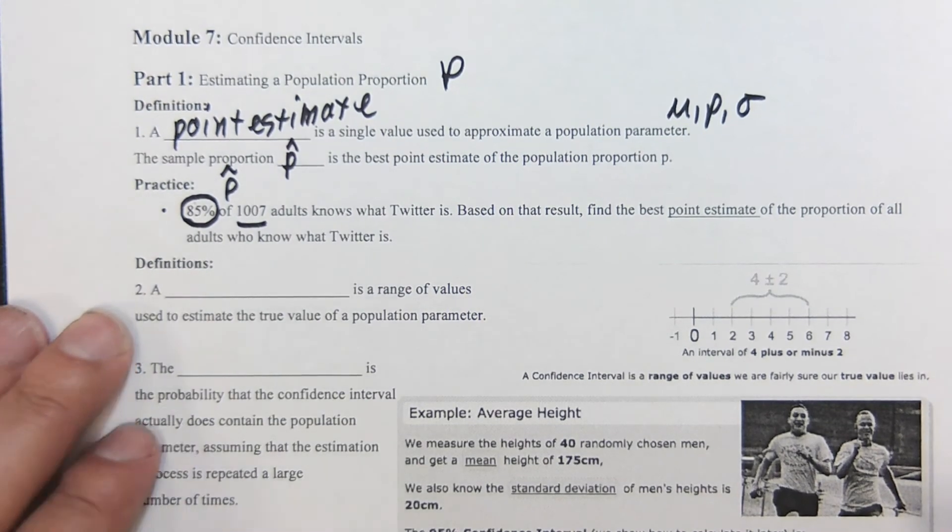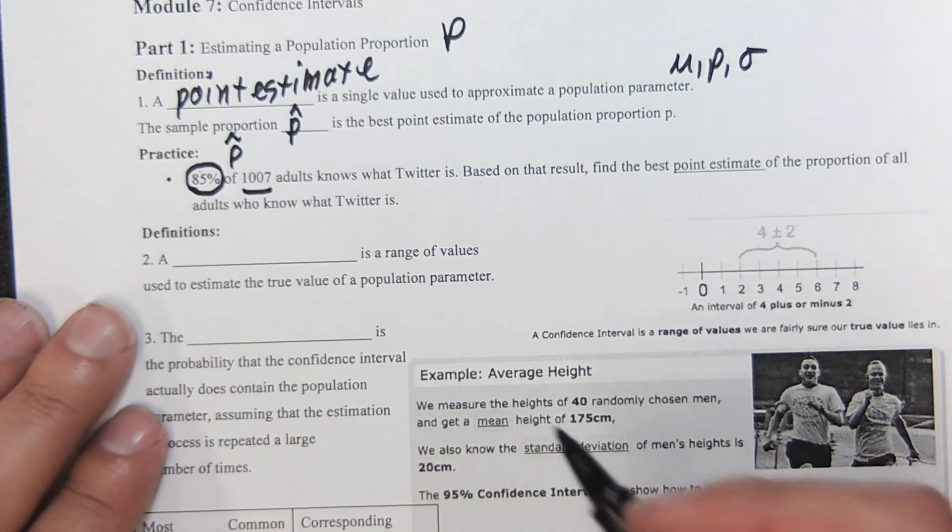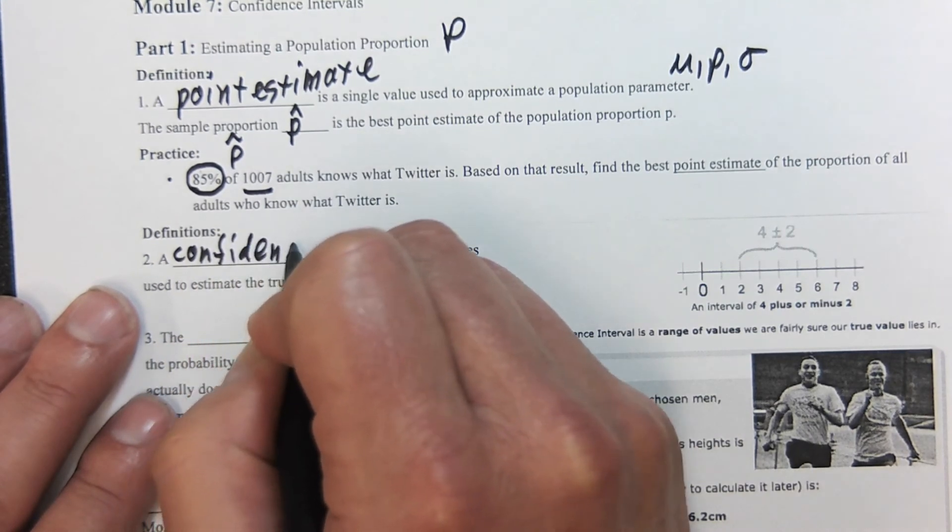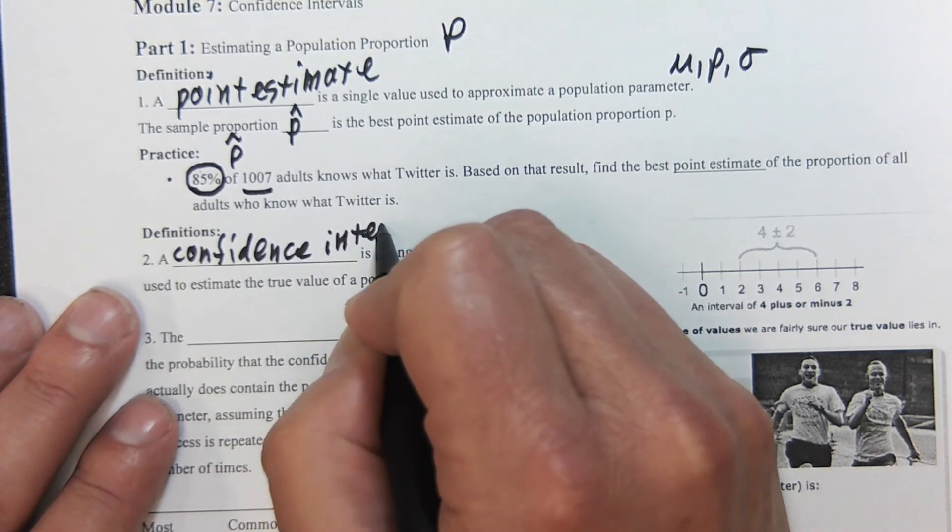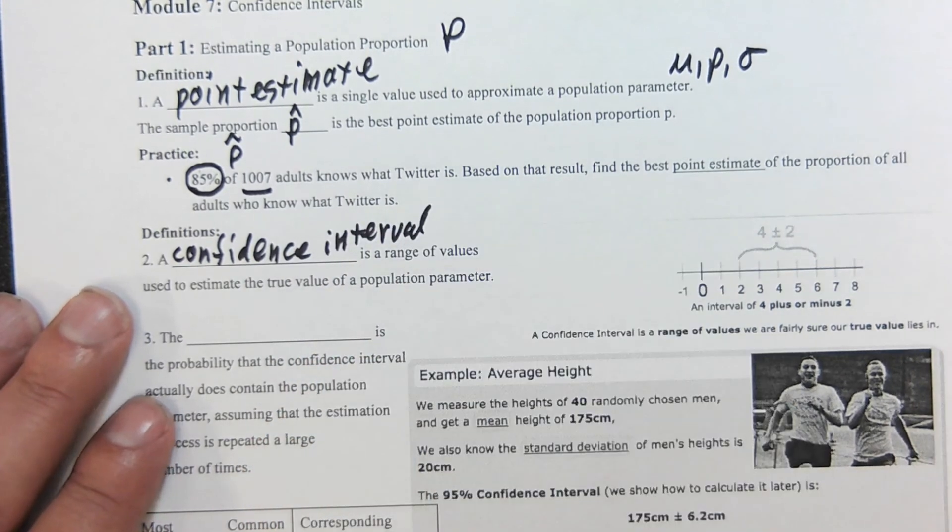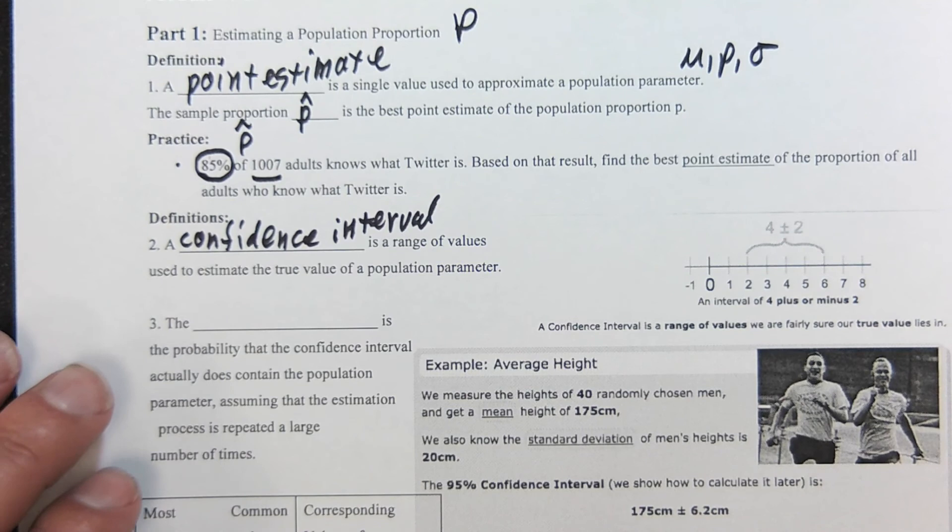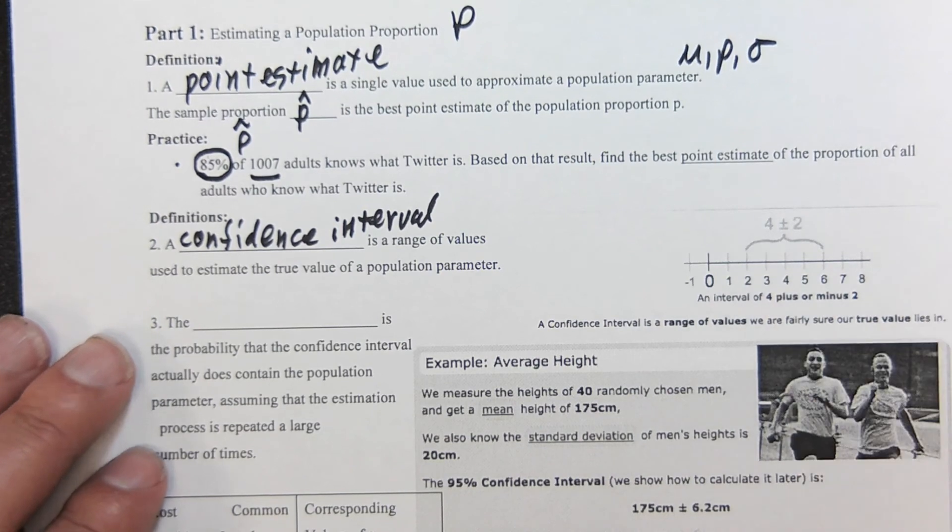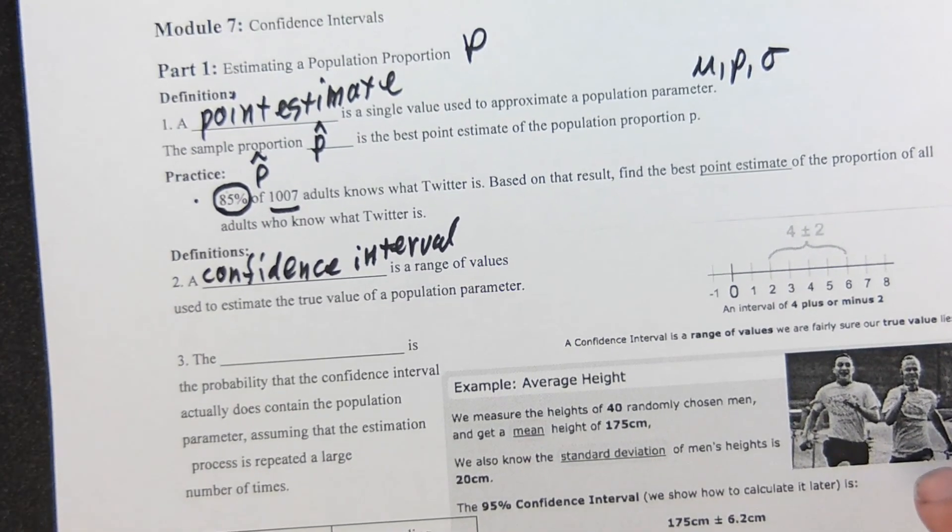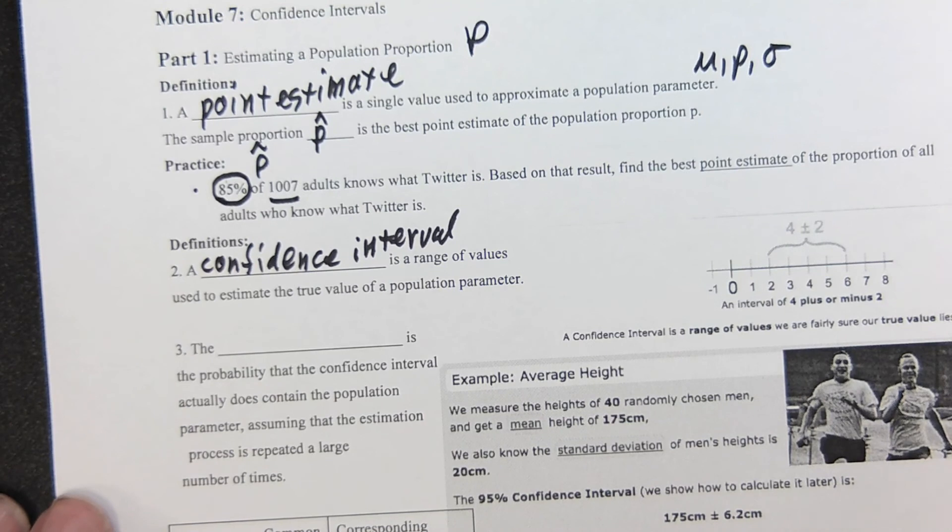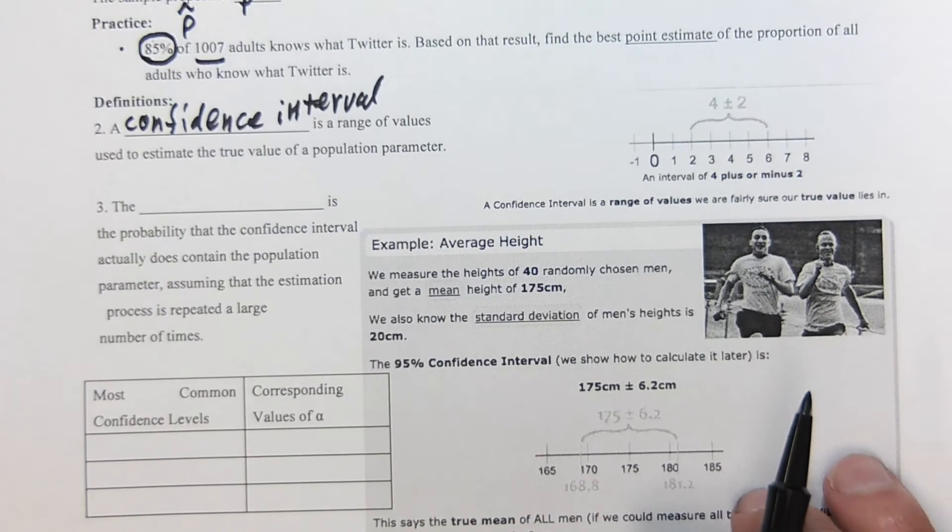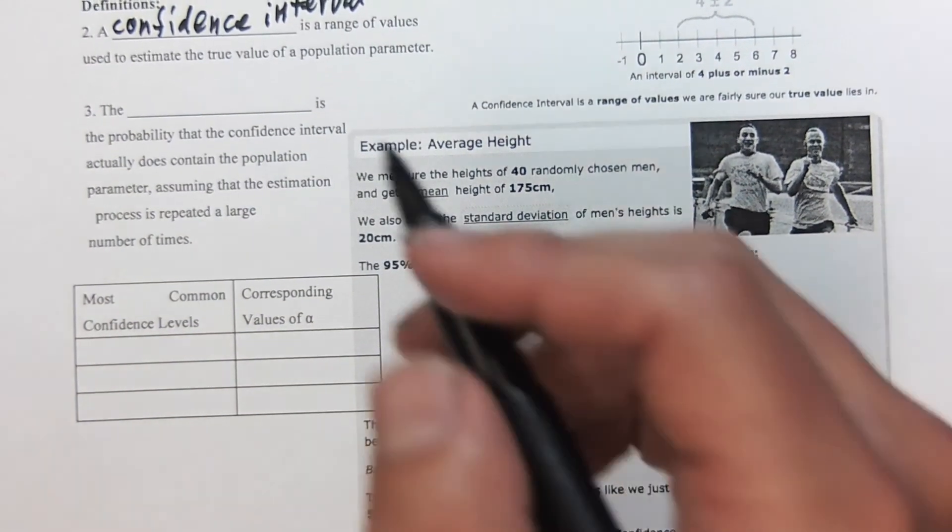Next part, a confidence interval is a range of values used to estimate the true value of a population. You can see here four is the mean and we're going to go so far away from that to have confidence that we are within a certain parameter.